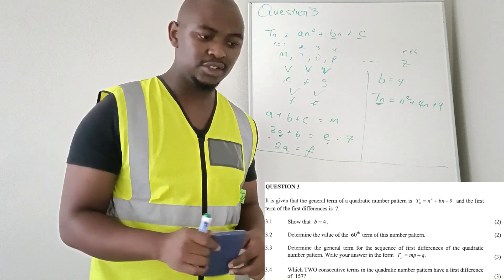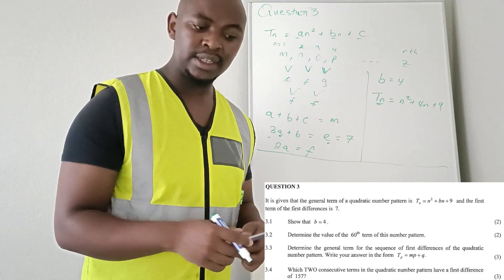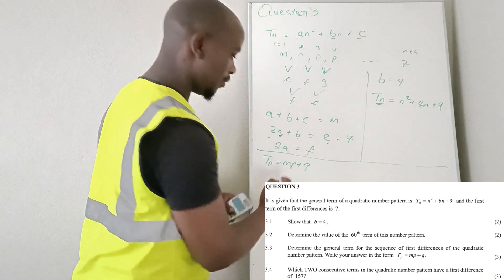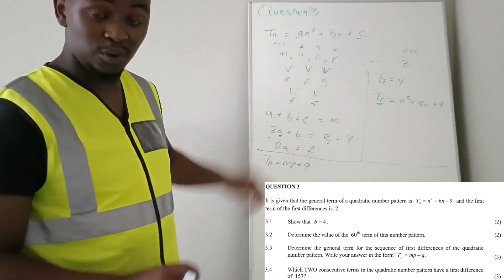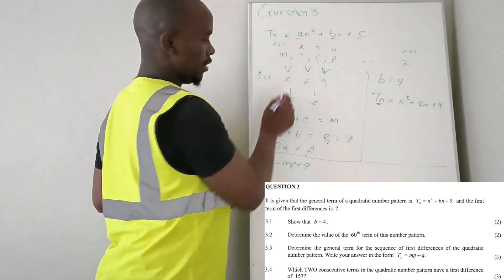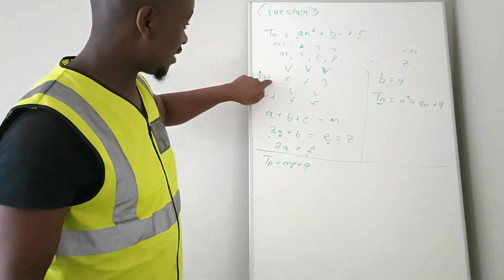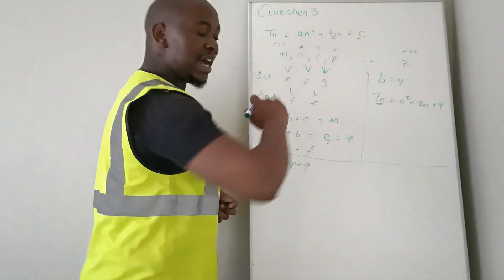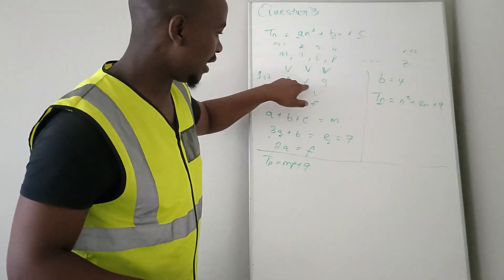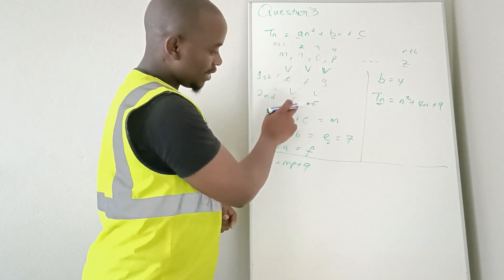In question 3.3, they ask us to determine the general term for the sequence of first differences of the quadratic pattern, and to write the answer in terms of Tp = mp + q. For a quadratic pattern, the first differences follow an arithmetic pattern because the second difference is constant — the difference between consecutive first-difference values is always the same.